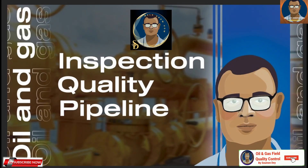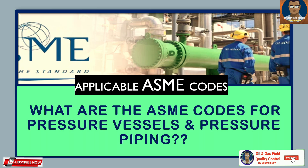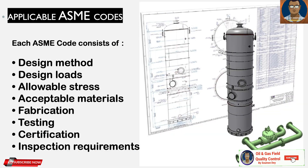Hello knowledge seekers, this is Showman from Oil and Gas Field Quality Control. Today we will have a very small video where we will see the ASME codes for pressure vessels and pressure piping. Each ASME code actually consists of design methods, design loads, allowable stress, acceptable materials, fabrication, testing and certification, and finally the inspection requirements.